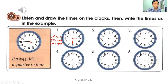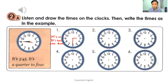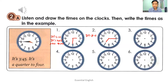Number two: it's seven fifteen — it's a quarter past seven. You have to draw an hour hand pointing to seven and a minute hand pointing to three. So you can write 'it's seven fifteen' or in words 'it's a quarter past seven'.